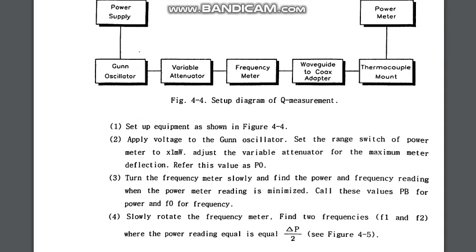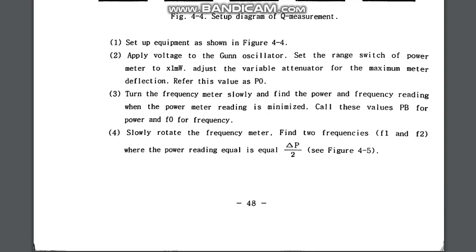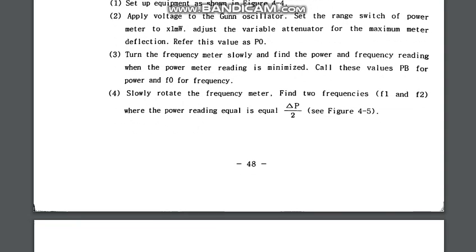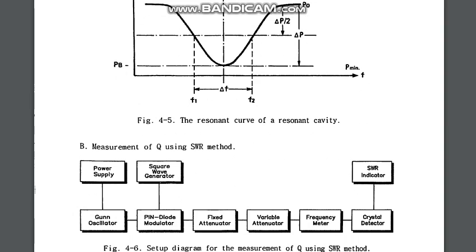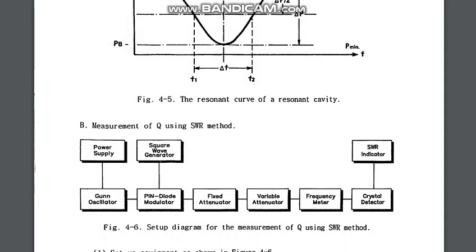Slowly rotate the frequency meter and find the two frequencies f1 and f2 where the power reading equals ΔP divided by 2. This gives the desired resonant curve of the resonant cavity. Changing the frequency from f1 to f2 traces the curve, with the half-power point at ΔP/2. Note that the resonant curve of a resonant cavity is opposite in shape to the resonant curve of an ordinary RLC circuit.